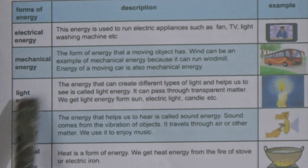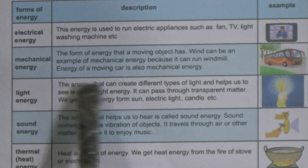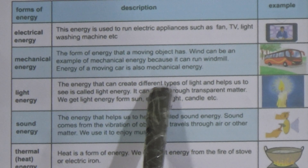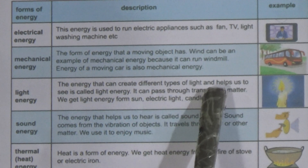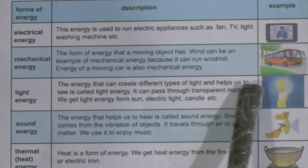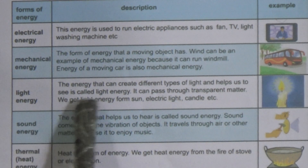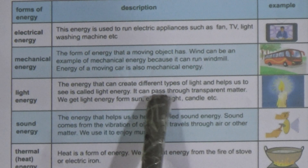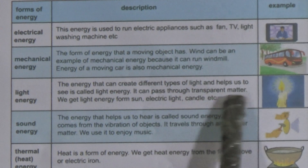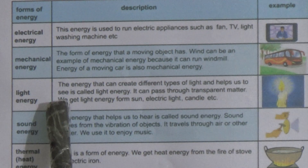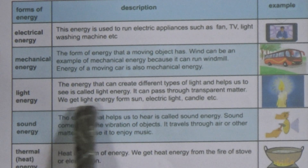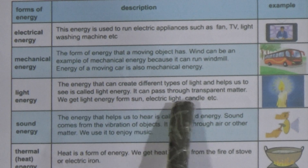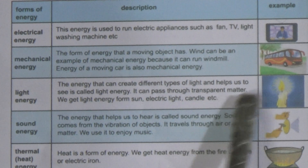Now come to light energy. The energy that can create different types of light and helps us to see is called light energy. It can pass through transparent matter. We get light energy from the sun, electric lights, and candles.